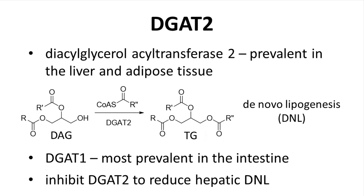This step is part of de novo lipogenesis in the liver. There is another form of this enzyme, DGAT1, which is mostly found in the intestine. So, a viable approach to reduce fat in a NASH patient's liver could be to inhibit DGAT2 and therefore block one source of fat synthesis in the liver. DGAT2 is the target for the Pfizer drug program.